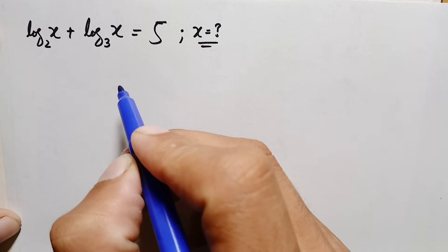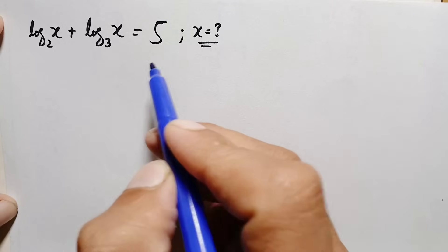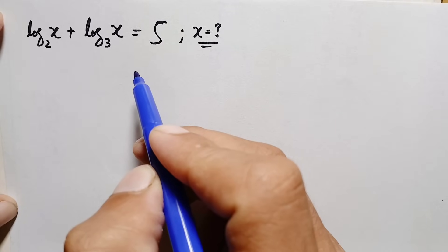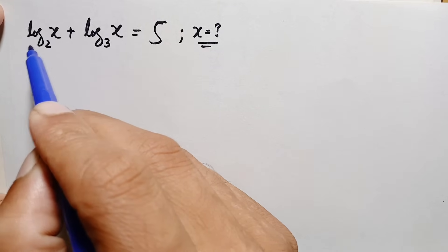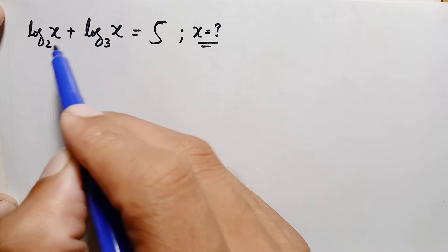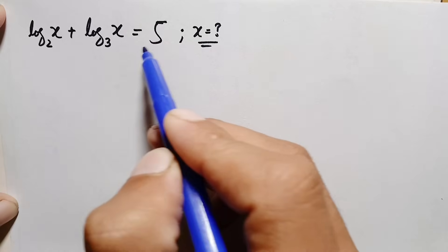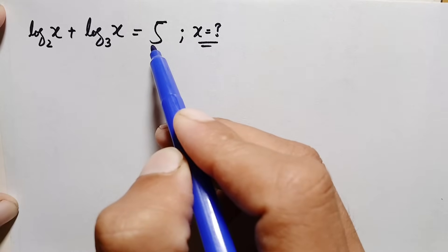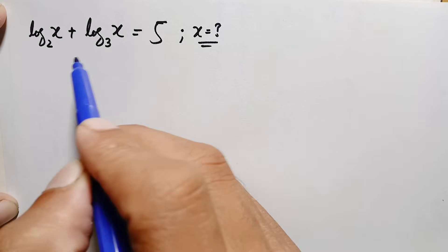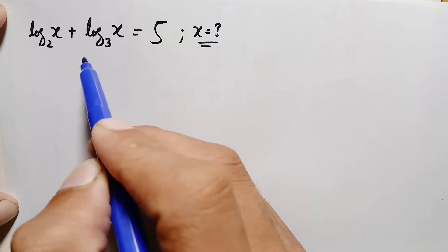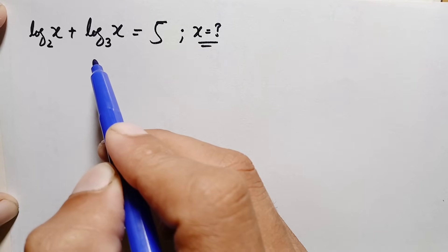Hello everyone, you are welcome. Today we have a very interesting logarithm math problem: log of x with base 2 plus log of x with base 3 is equal to 5. We'll try to find out the value of x in this different bases logarithm math problem.